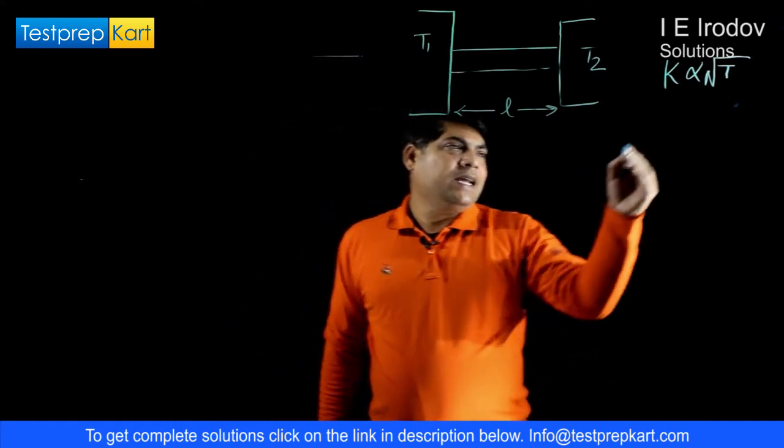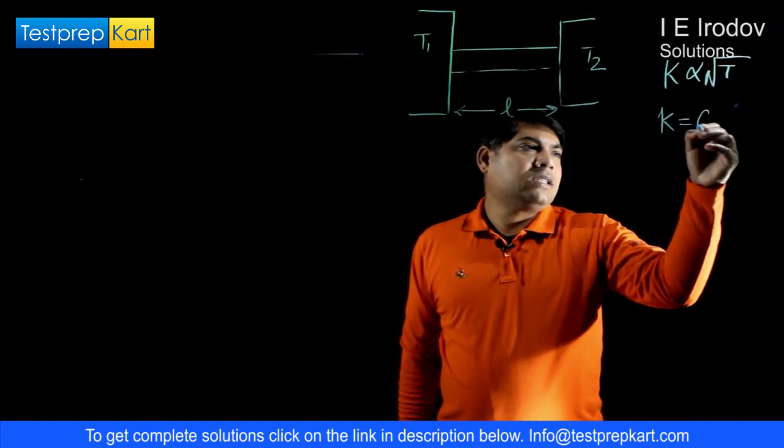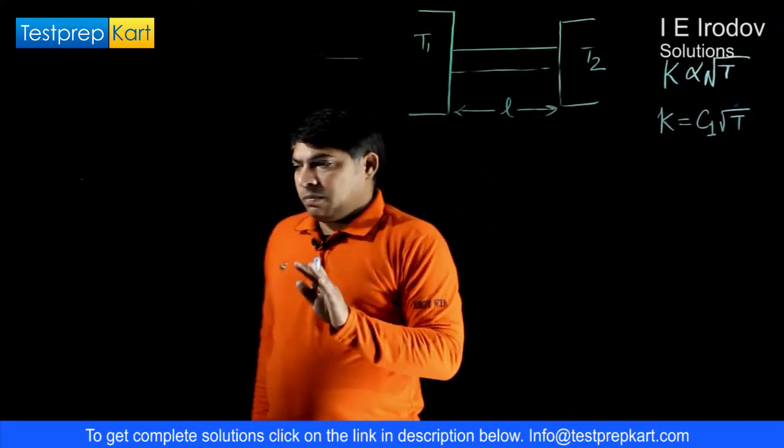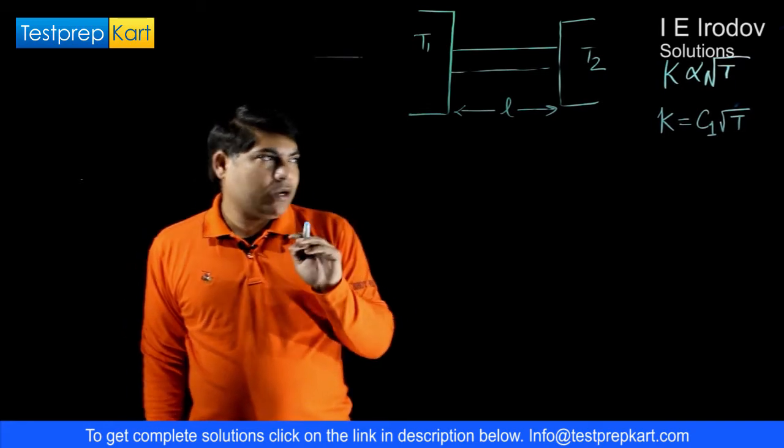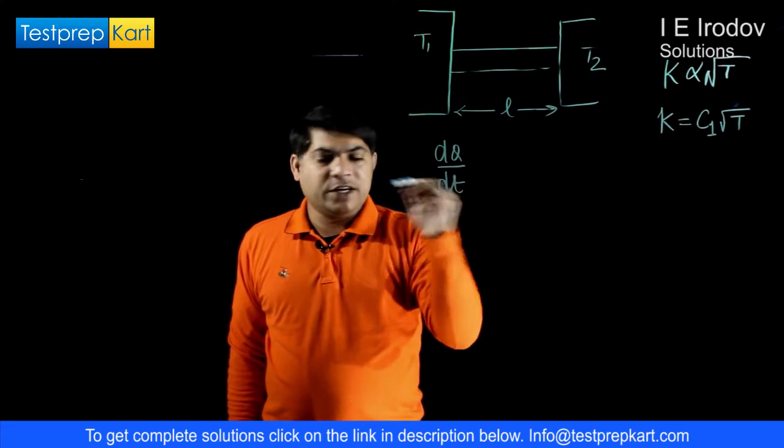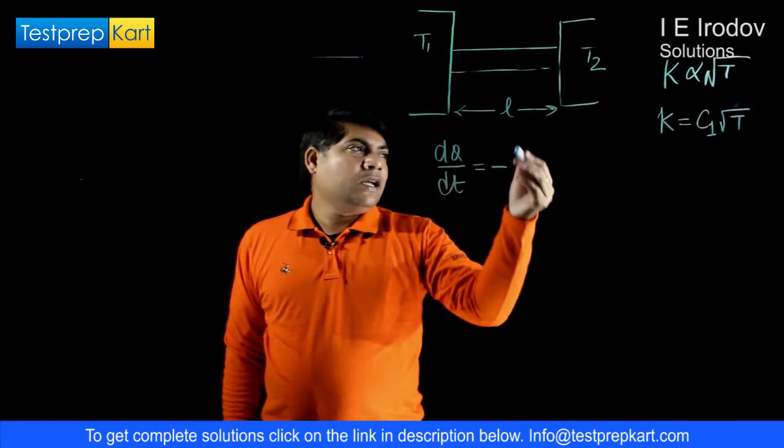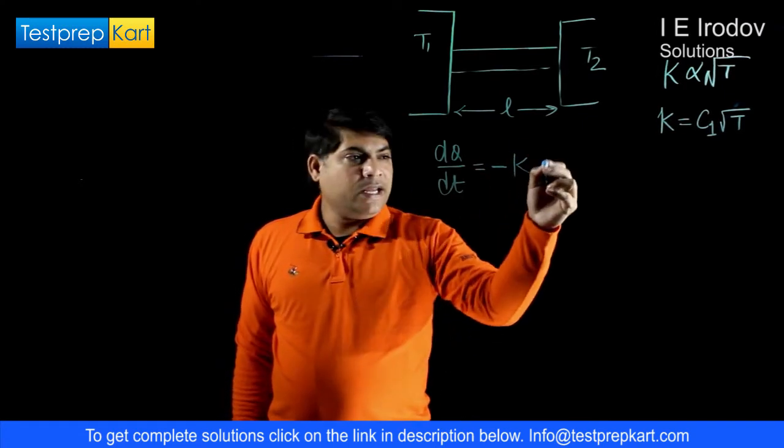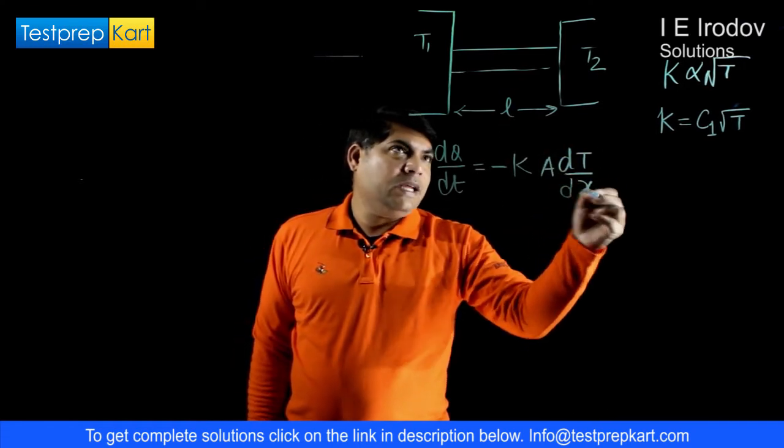We can take that K is equals to any constant, let us take C1 into root T. In this case rate of heat flow would be constant. We can write dQ over dt, rate of heat flow, and because it is moving from higher temperature to lower, as we know the heat flow.